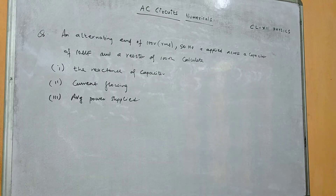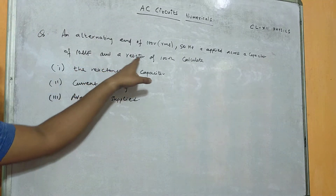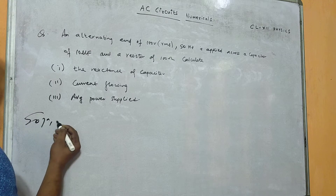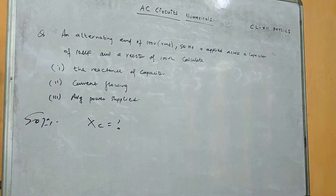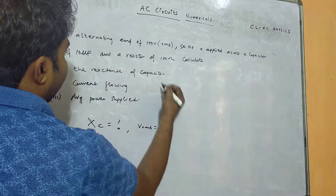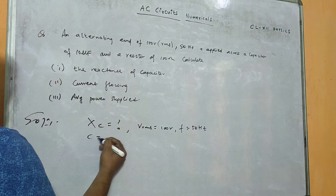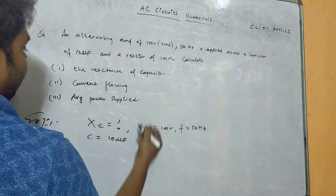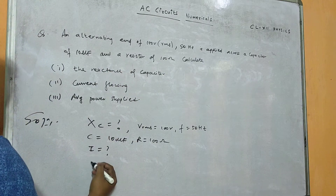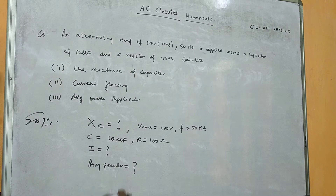Next question: an alternating EMF of 100 volt RMS at 50 hertz is applied across a capacitor of 10 microfarad and a resistor of 100 ohm. We have to calculate the reactance of the capacitor, meaning we have to find Xc. The given values are: Vrms equals 100 volt, frequency is 50 hertz, capacitor is 10 microfarad, resistor is 100 ohm. We also have to find the current and the average power.